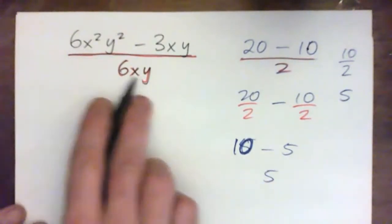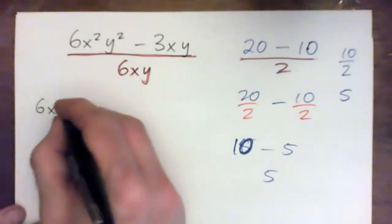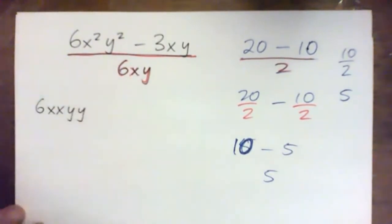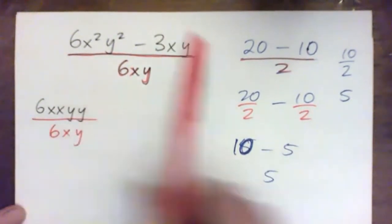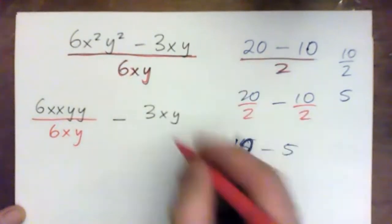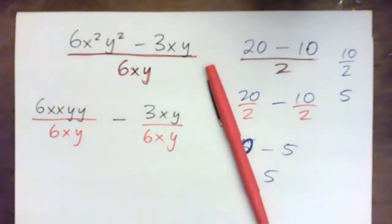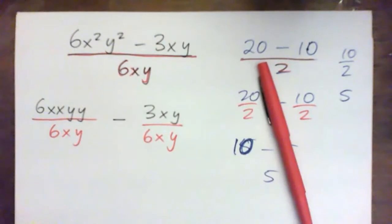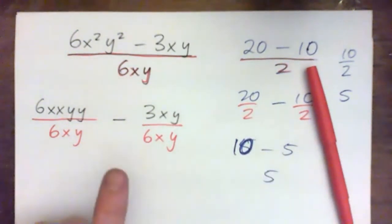So we're going to divide each individual thing by 6xy. And I want everyone at home and everybody to write it like this. And then cross-cancel, right? So if you could press pause on the video and try it yourself, and then I'll go through it.